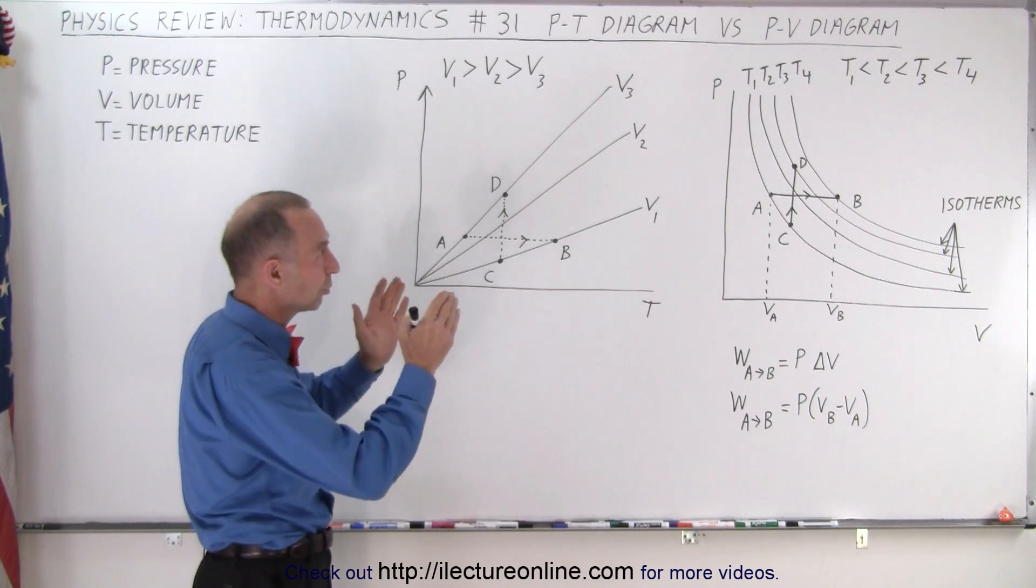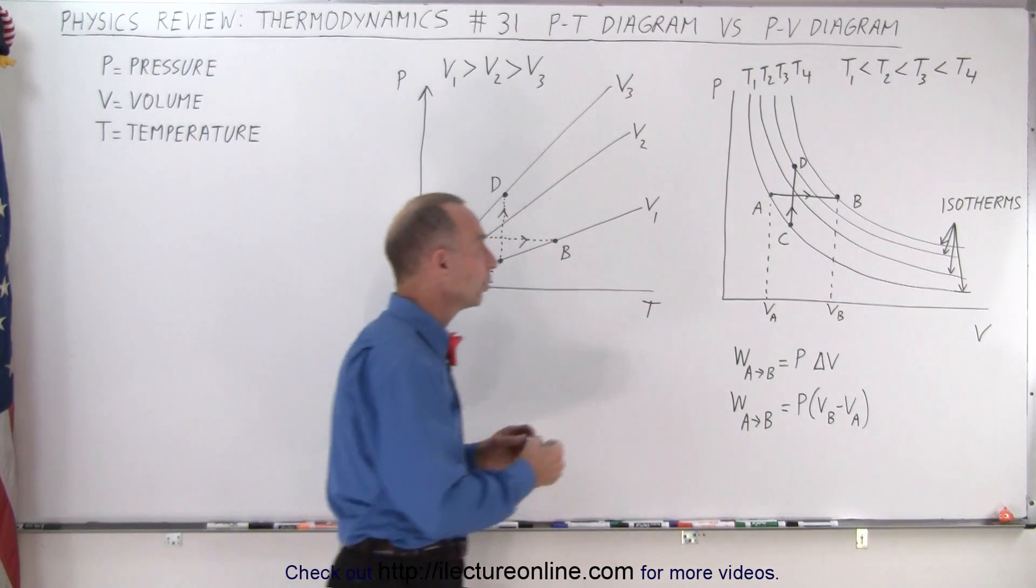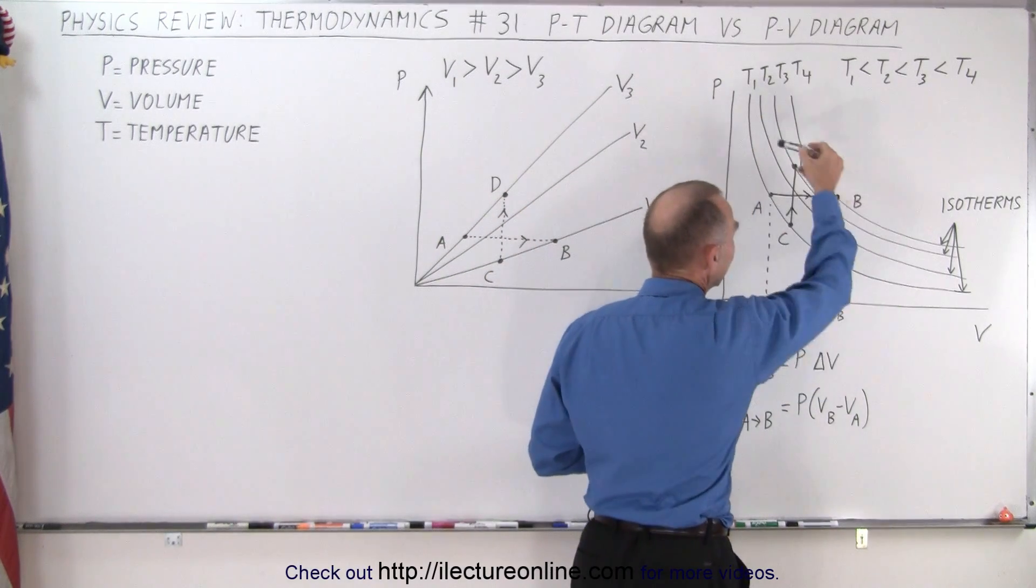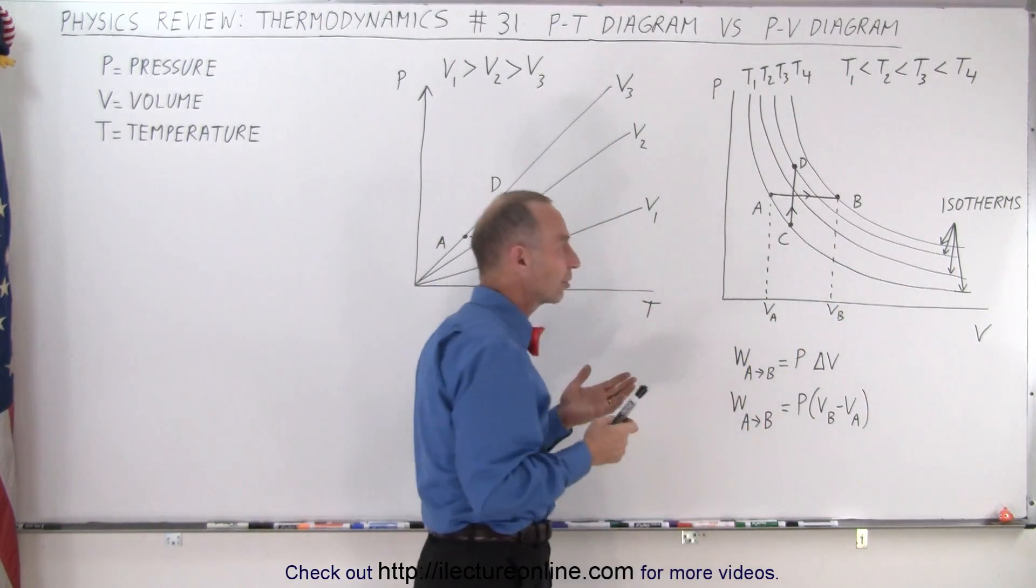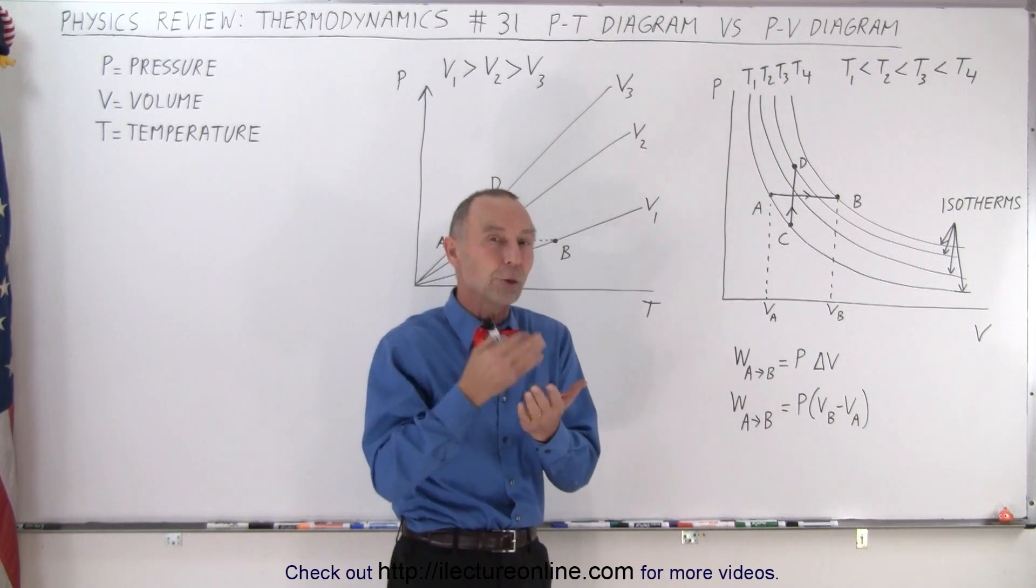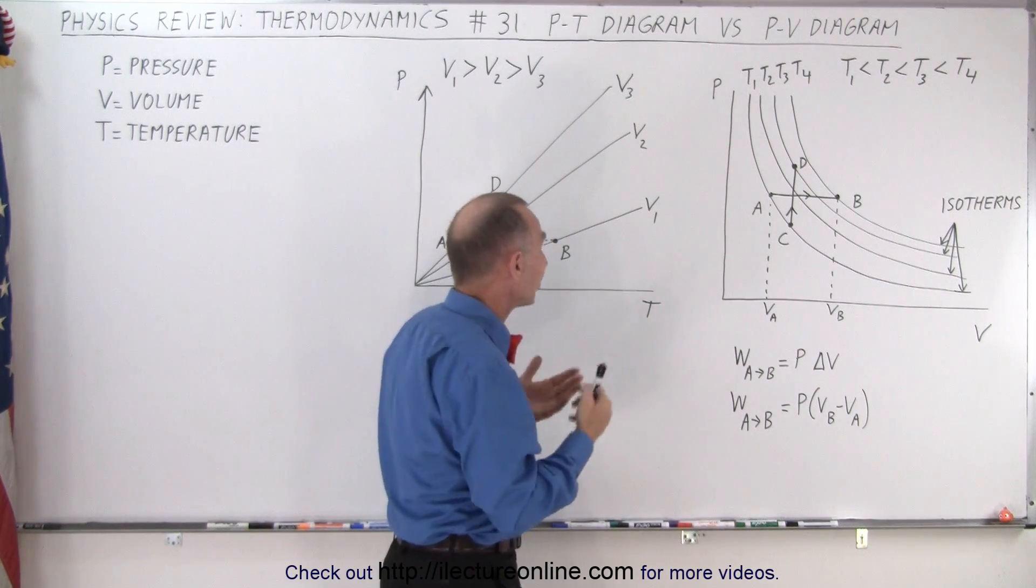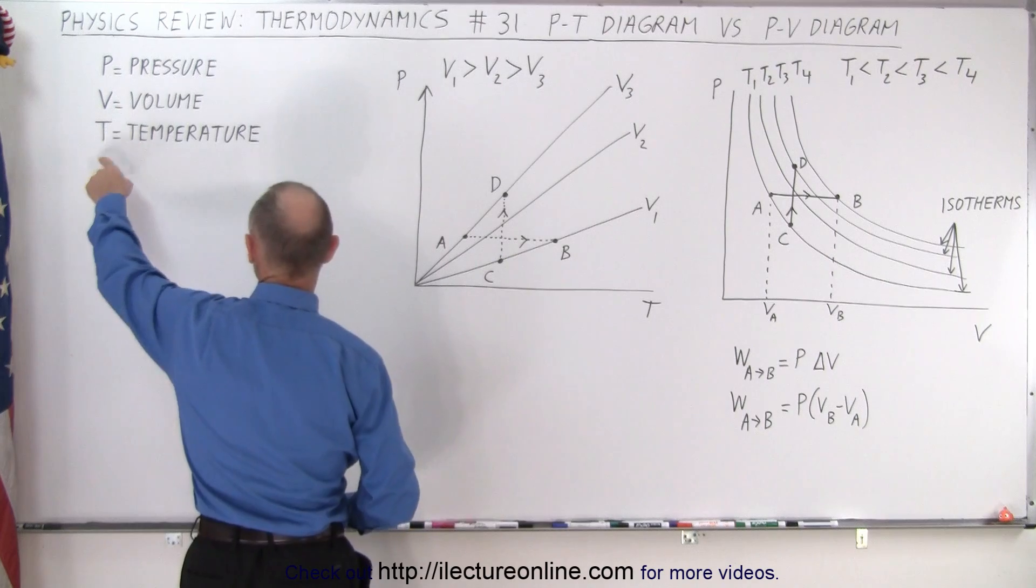So let's first go to the more familiar PV diagram. Notice we have these curved lines. The reason why we need these curved lines is because those curved lines represent the third state variable. There's three state variables: pressure, volume, and temperature.